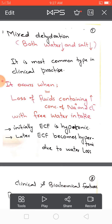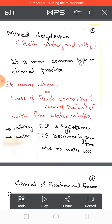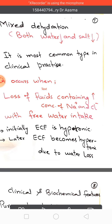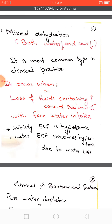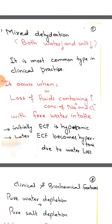Mixed dehydration is due to the loss of both pure water and pure salt. This is the most common type of dehydration in clinical practice. Initially, ECF will be hypotonic because loss of sodium is major, but loss of water will be compensated at the expense of ICF.